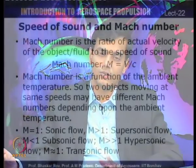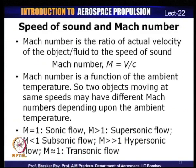Based on this, we define a non-dimensional parameter — the ratio of the velocity of the fluid or object to the speed of sound — known as the Mach number. Mach number is the ratio of the actual velocity of an object or fluid to the speed of sound. In a wind tunnel, the fluid moves and the object is stationary; for an actual aircraft, the aircraft moves through air at rest. M = V/C = V/√(γRT).